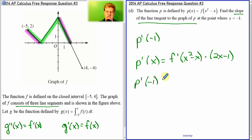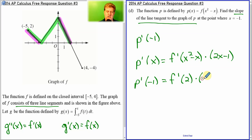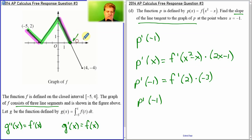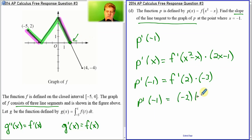So P prime of negative 1 is f prime of: negative 1 squared is 1, and 1 minus negative 1 would be 2. So we evaluate f prime of 2. Times 2 times negative 1 minus 1, which is negative 3. What is f prime of 2? Well, 2 is right here on the graph. The slope of that line is negative 2. Negative 2 times negative 3 gives us 6. So P prime of negative 1 equals 6.